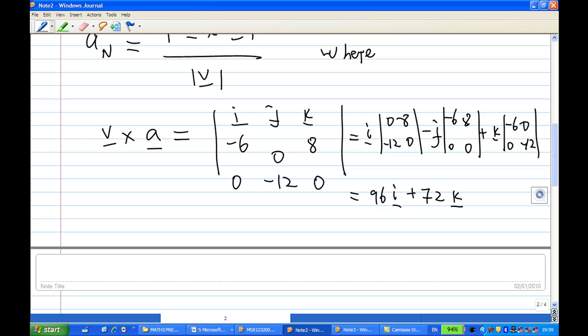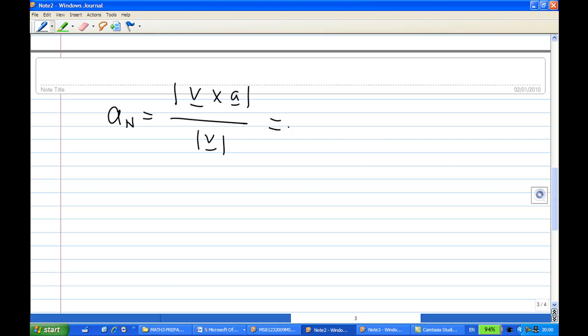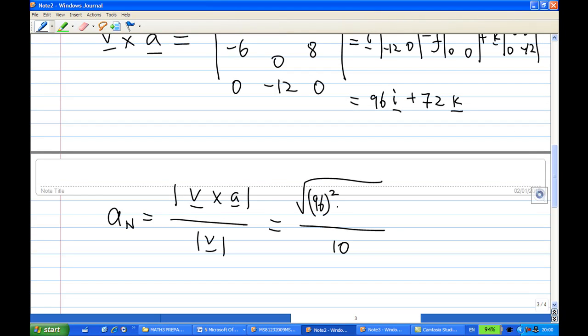This is v cross a. And so the magnitude of An is equal to magnitude of v cross a over the length of v. The length of v we found earlier was 10. And this is going to be square root of 96 squared plus 72 squared. This can be simplified because 72 and 96 have a common factor. If you take out the 12, this is 12 times square root of 8 squared plus 6 squared, which is also 10. So this is 12 times 10 over 10, which is 12.